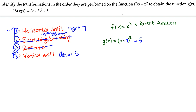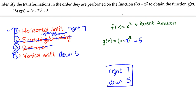So the transformations in the order that they're performed are: right 7 places, no stretching, no reflection, and down 5.